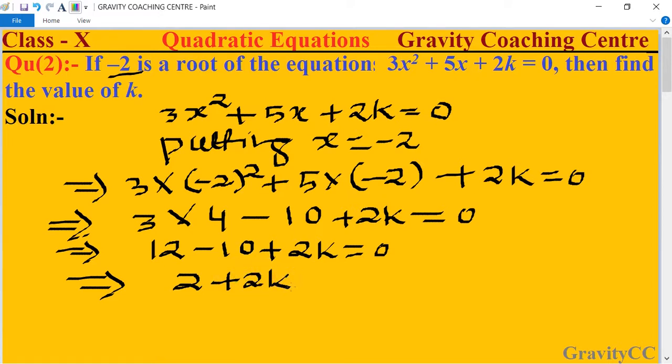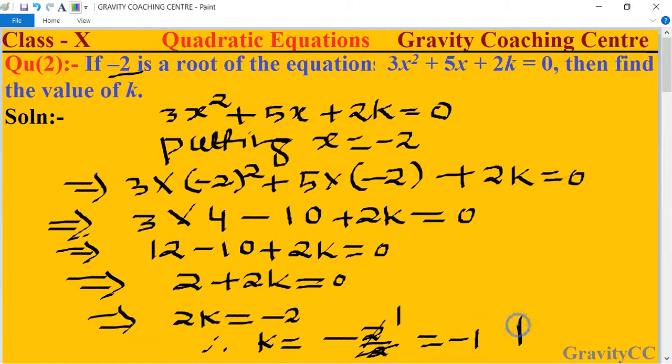Therefore k = -2/2. The 2s cancel, so k = -1, which is the required answer.